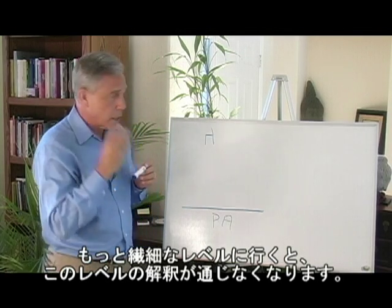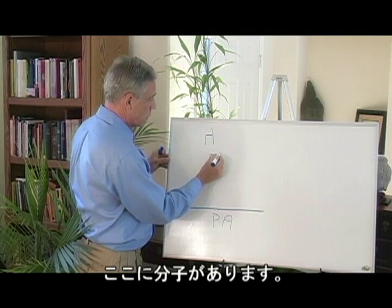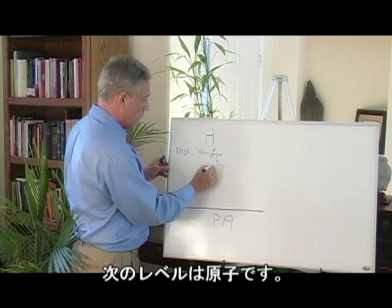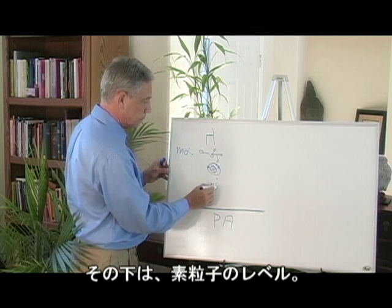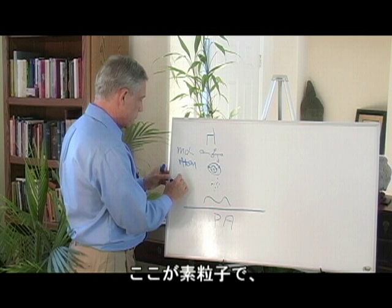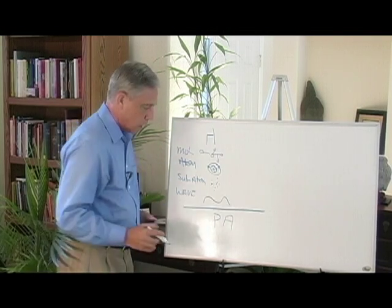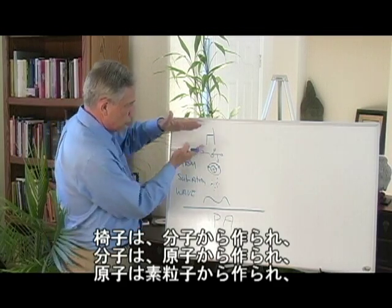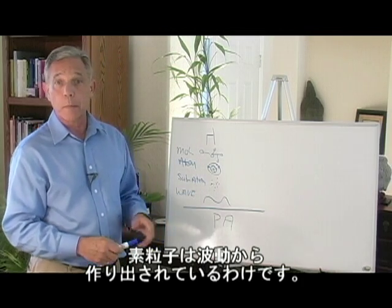The level of the senses is left behind when we go to a finer level. Here we have the molecular level, then the atomic level, then the subatomic level, and the level of the wave. This is a hierarchy: the chair is made of molecules, molecules are made of atoms, atoms are made of subatomic particles, and subatomic particles are made of waves.